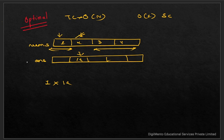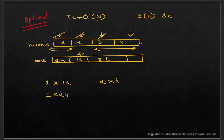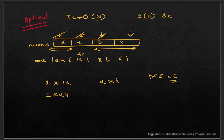For element 1: nothing before it, so prefix=1. After it: 2×3×4=24. Answer is 1×24=24. For element 3: before it is 1×2=2, after it is 4. Answer is 2×4=8. For element 4: before it is 1×2×3=6, nothing after so suffix=1. Answer is 6×1=6. When there is nothing before or after, we consider the value as 1.